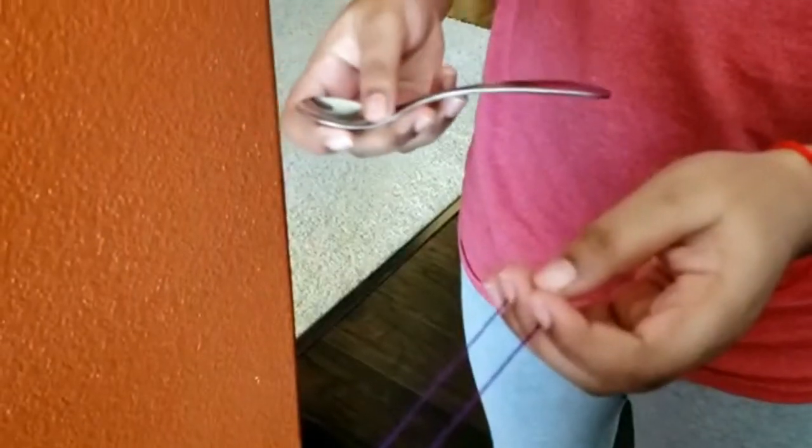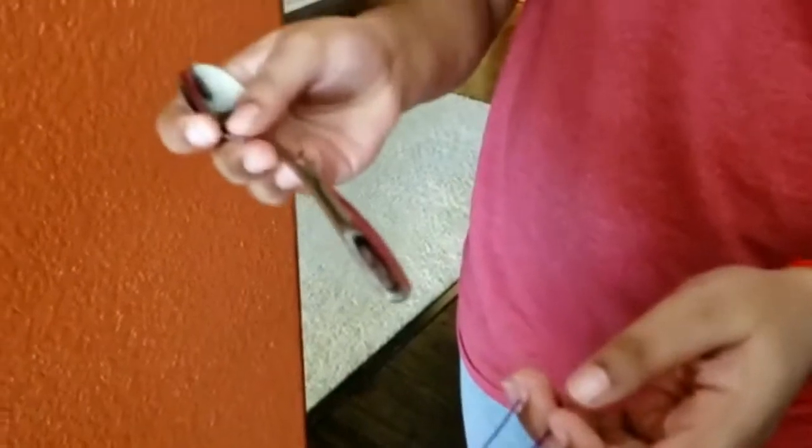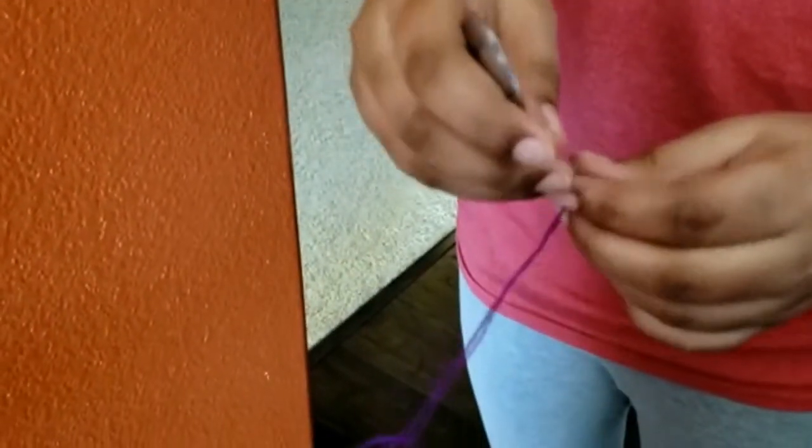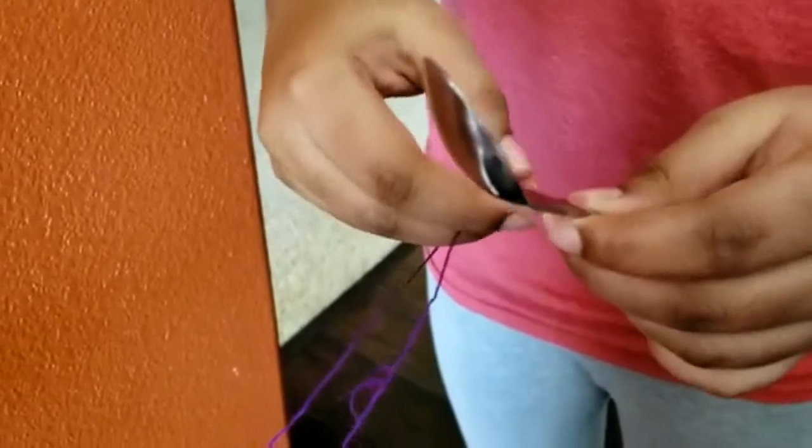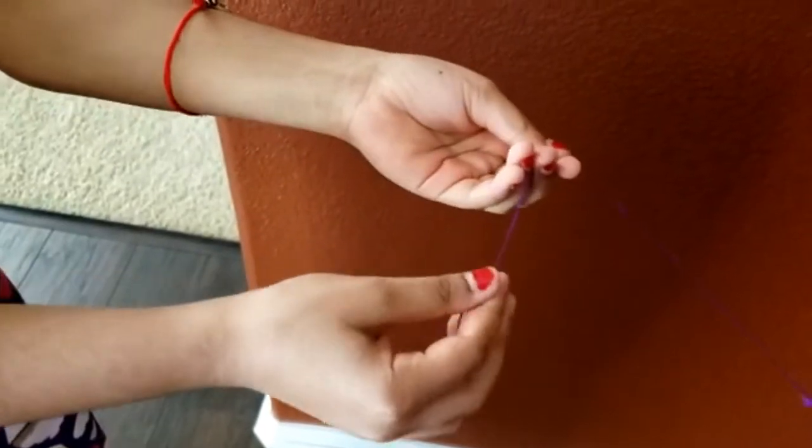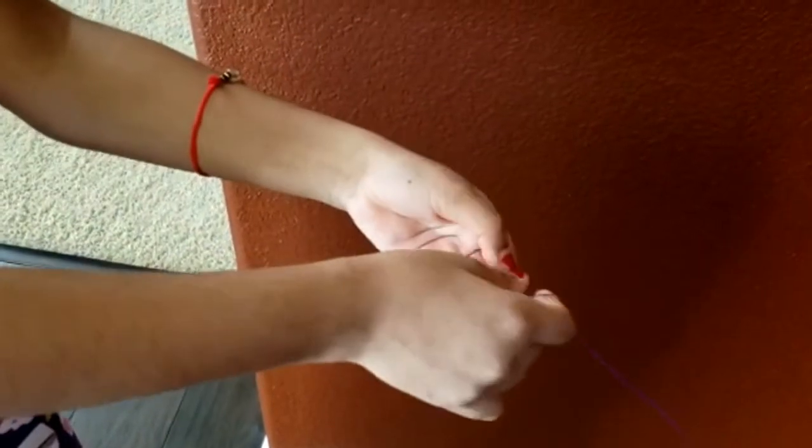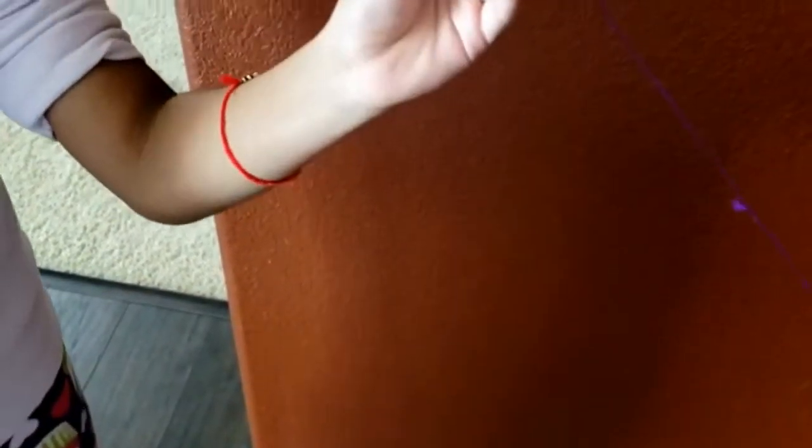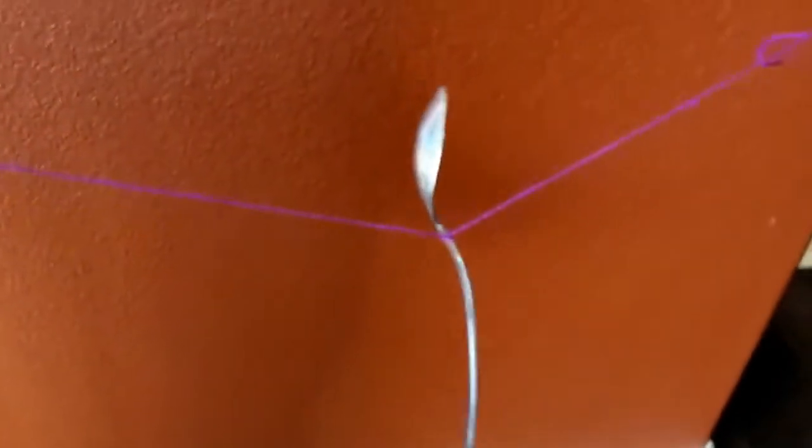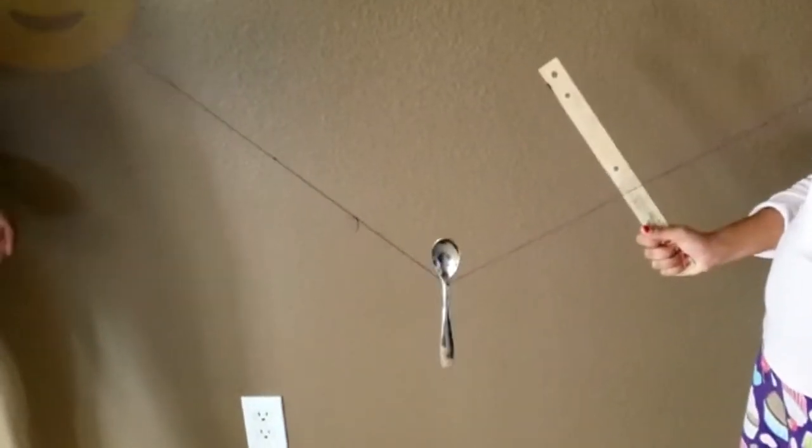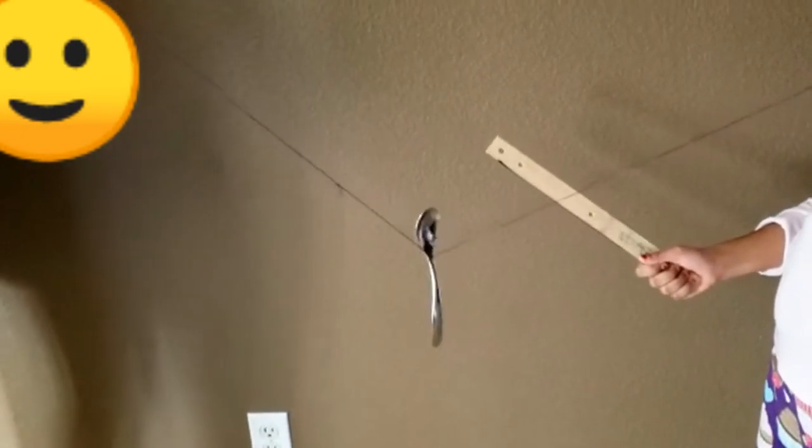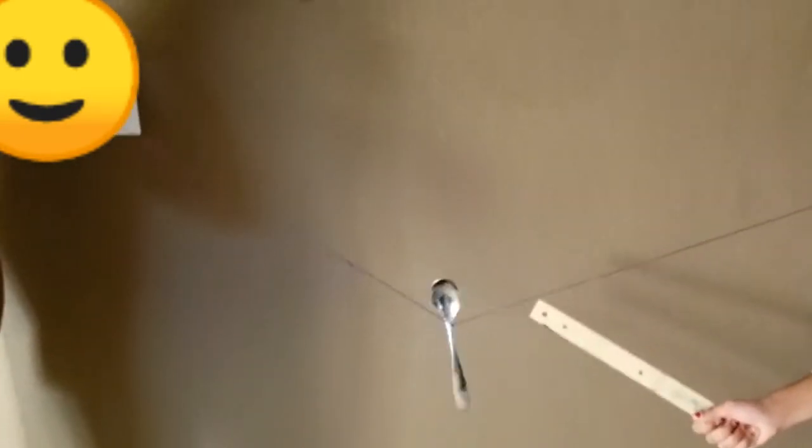Start off by taking the metal spoon, putting it in the middle of the string, and tying it. Wrap the string around your middle finger and your index finger, then put it to your ear. Let the spoon hang below in the middle. Now make sure that you're holding the string to your ears. Have someone take the ruler and hit the spoon.